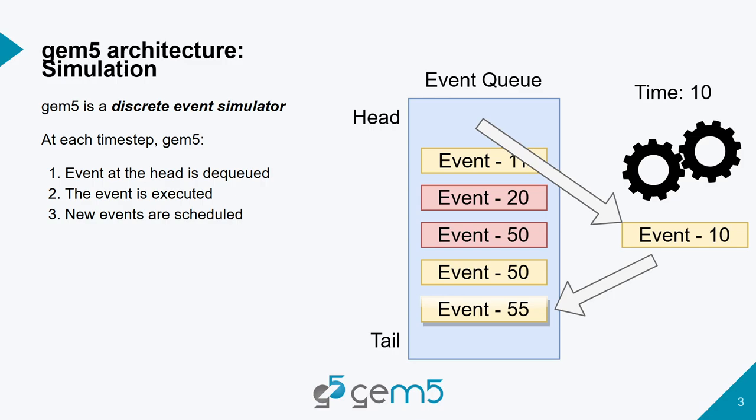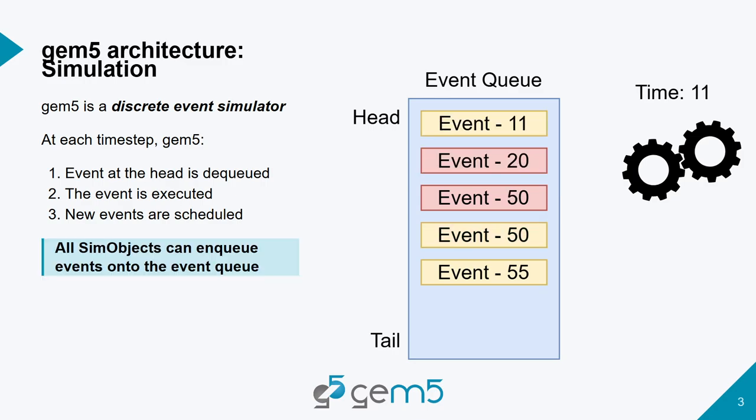An event at a given tick can generate multiple events, one event, no event, or events of different types. So it's very flexible. Some objects are there for you to be able to talk to the simulator, to schedule events and make things happen in the future.